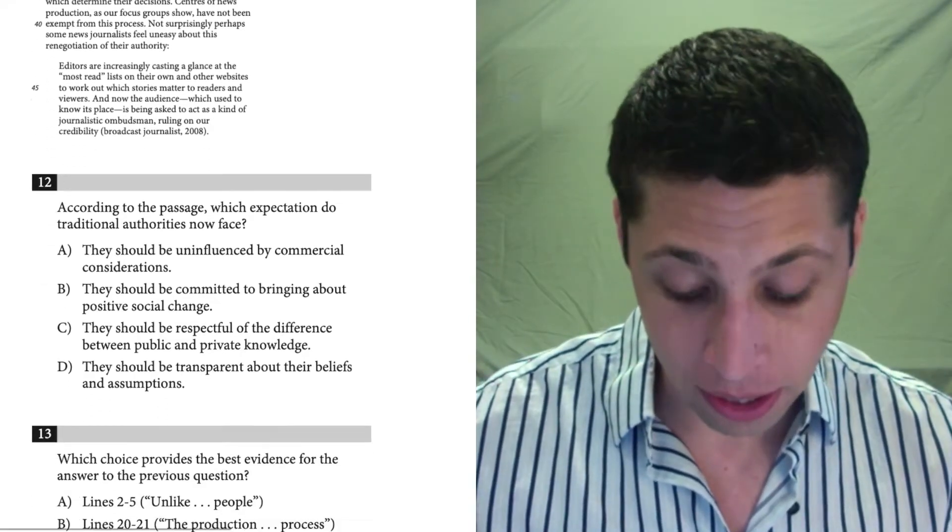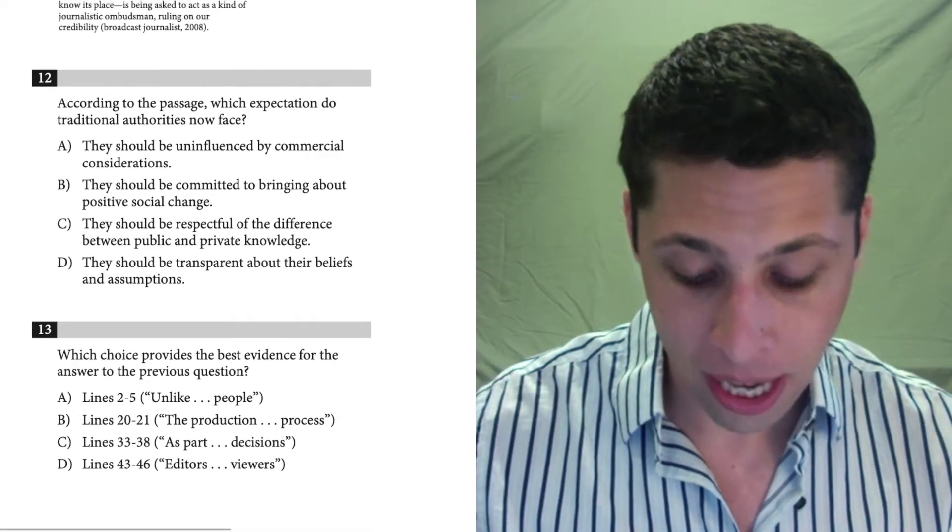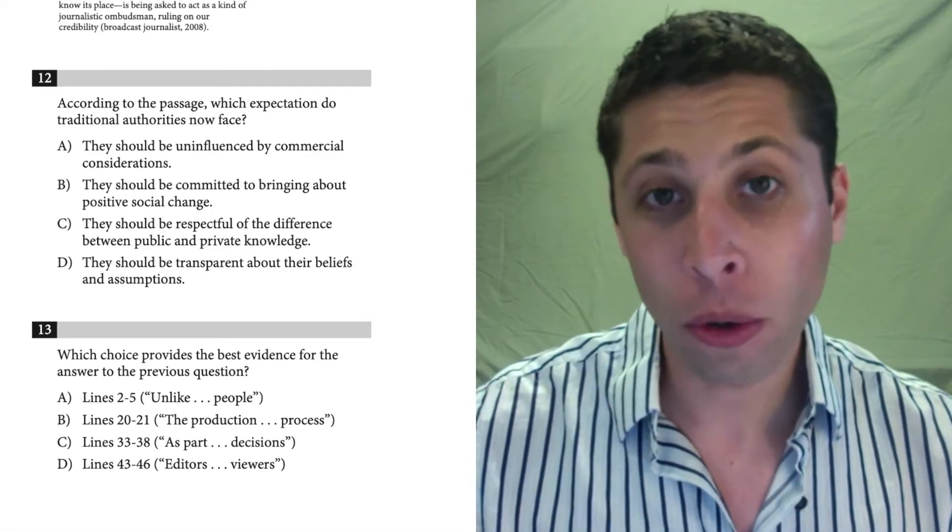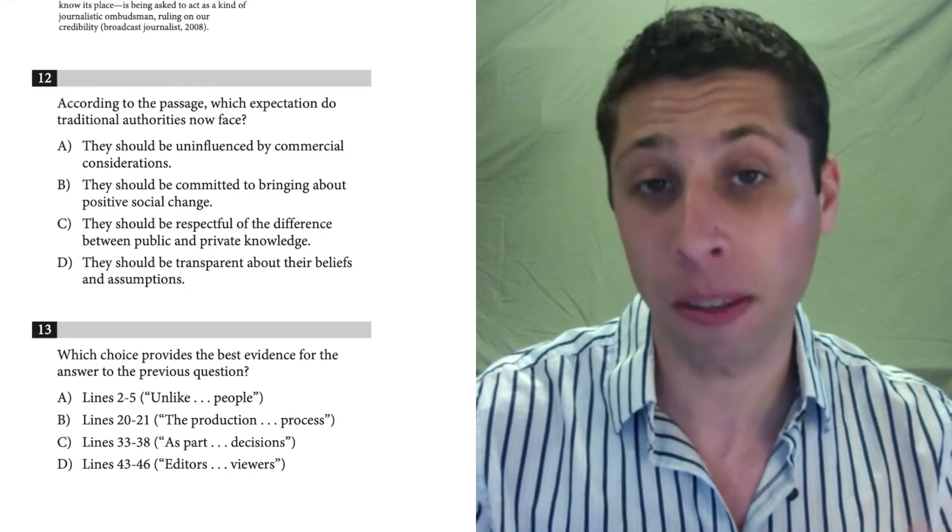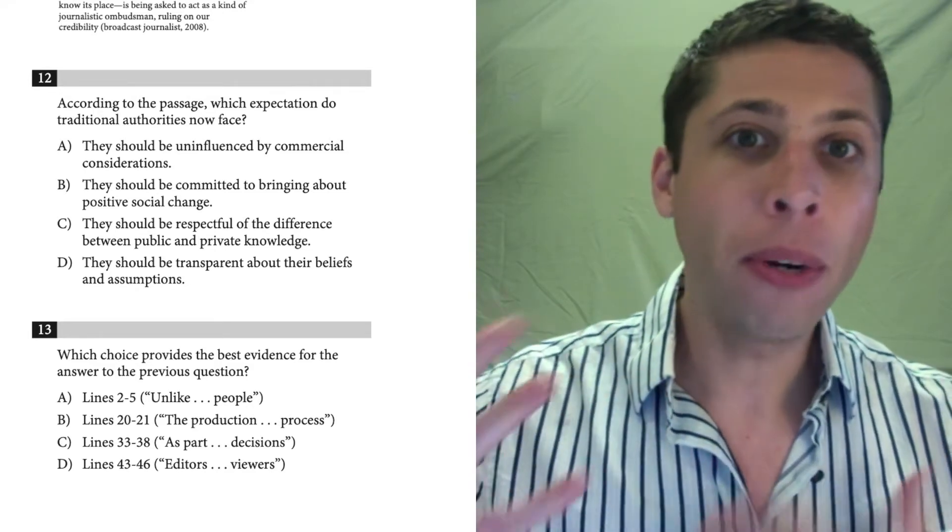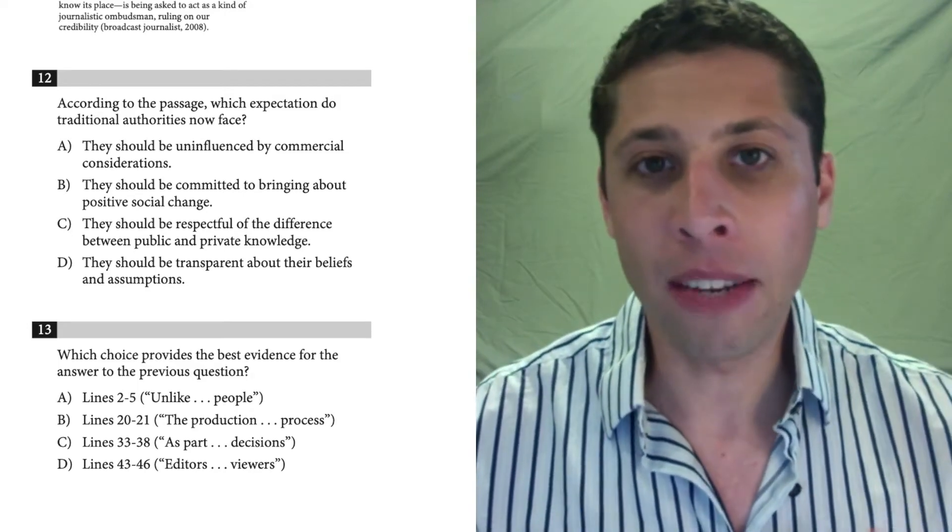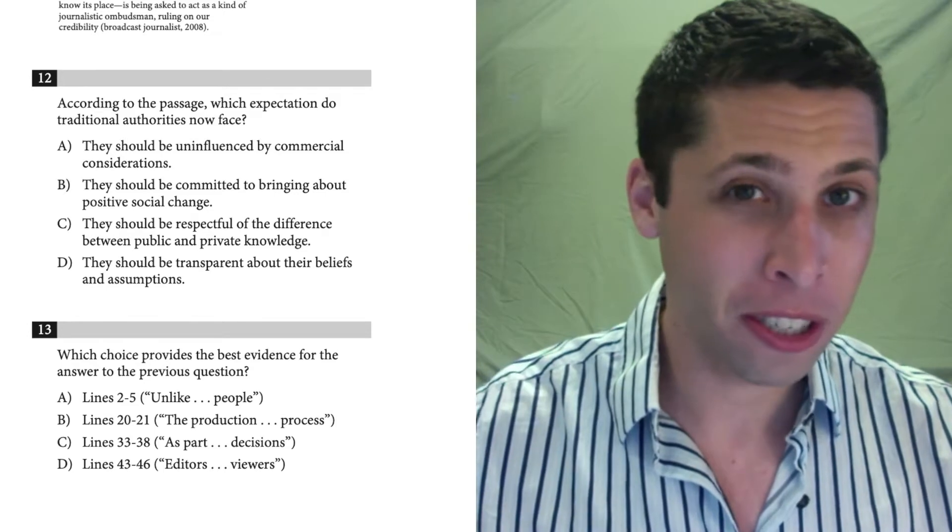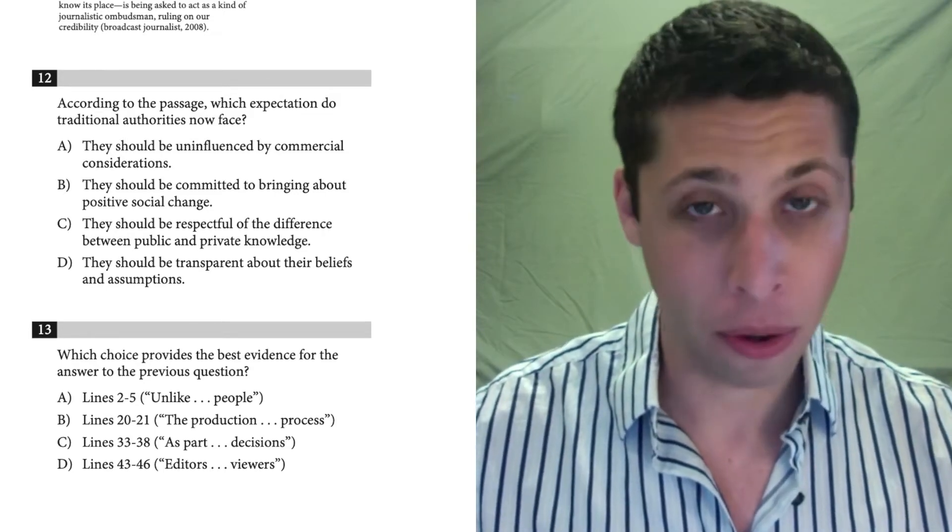And sure enough, if I continue on to question 13, I see that I have an evidence pair. So these two questions are linked. Number 13 gives me some possible line references for number 12. But to bring the chronology rule in even further, I could use other questions to narrow my choices in number 13 a little bit.